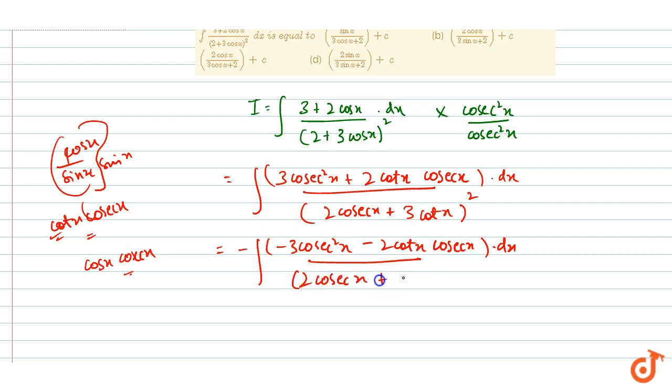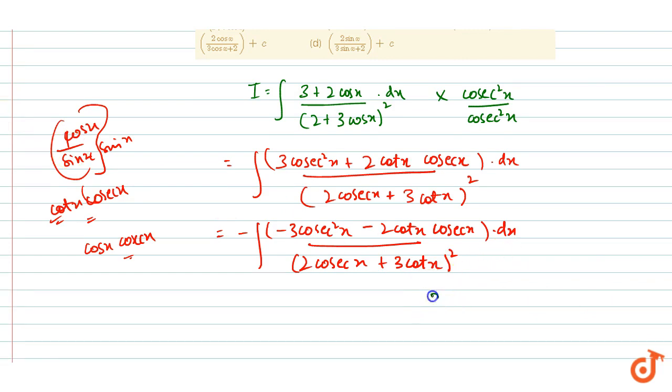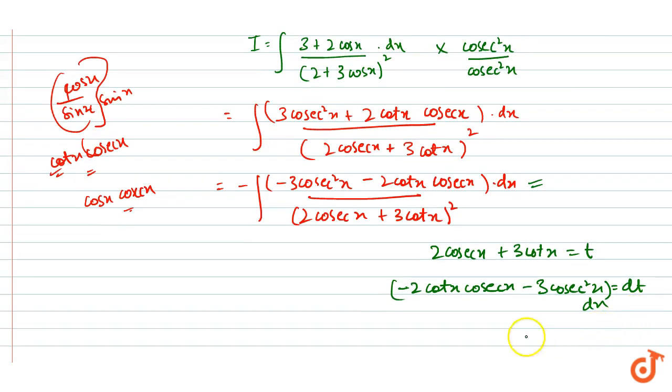Now putting 2cosecx + 3cotx equals to t. Then differentiating, we have (-2cosecx·cotx - 3cosec²x)dx = dt. This term is in the numerator, so we can write -dt in place of the numerator.